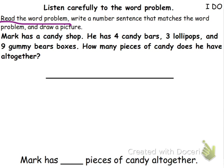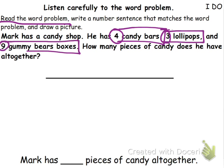This time as I read it, I'm going to circle those important numbers, underline the question, and box those important words. It says: Mark has a candy shop. He has four candy bars, three lollipops, and nine gummy bear boxes. How many pieces of candy does he have altogether? Now after we do that, we have to write the number sentence that matches the word problem.